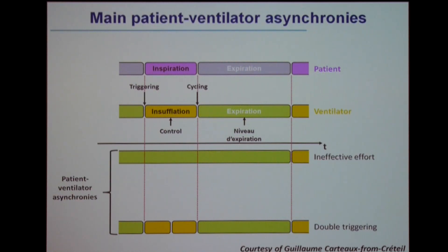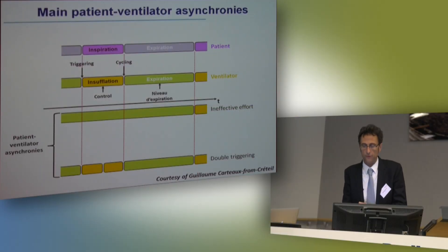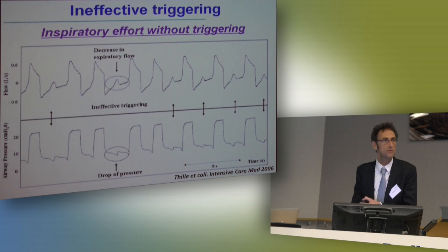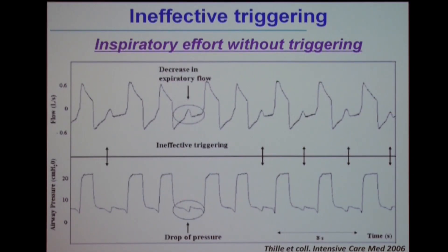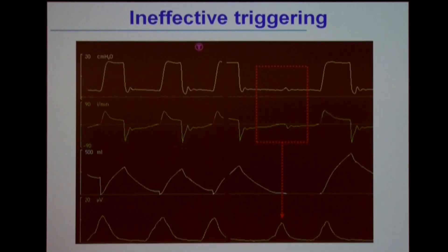Ineffective effort is very simple: the patient inspires but is not able to trigger the ventilator, so the inspiration is not followed by a cycle from the ventilator. The second asynchrony is double triggering — one inspiration from the patient triggers two cycles. Here is an example of an ineffective effort: you can see on these traces that the patient tried to trigger the ventilator, but this attempt was not followed by a cycle. Another example shows EDI traces with a neural inspiration that is not followed by a cycle.